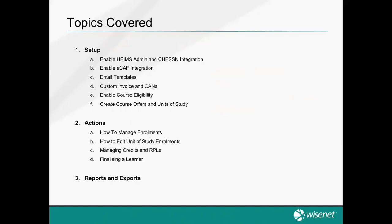I'm hoping everybody is familiar with VET Student Loan terminology, as I'll be using terms like units of study, ECAF (electronic commonwealth assistance form), PEMS (your main help desk), HEPCAT (your reporting site, similar to SVTS or debt connect), and CHESSN — the commonwealth number allocated to every VET Student Loan student before your first submission. If you have questions at any point, I'll stop at each step; otherwise, type your questions and I'll get to them towards the end.